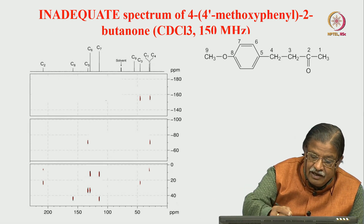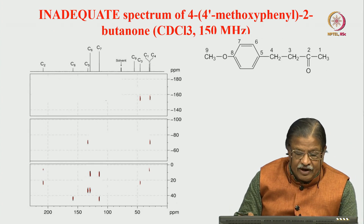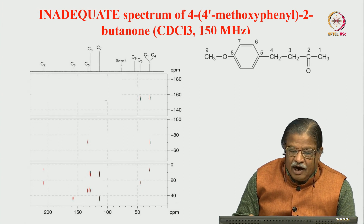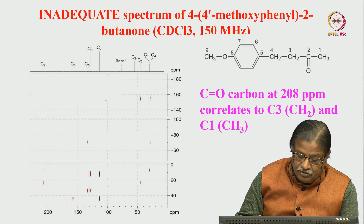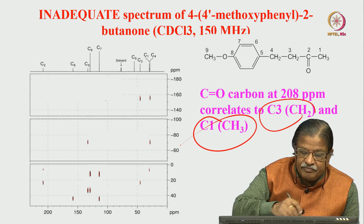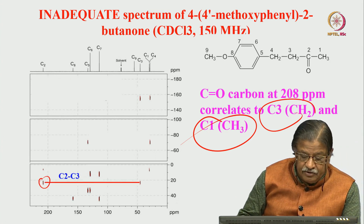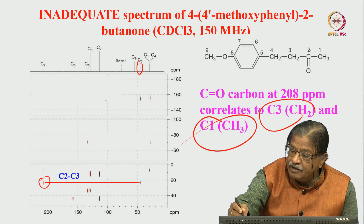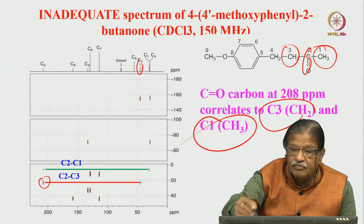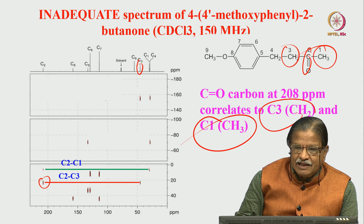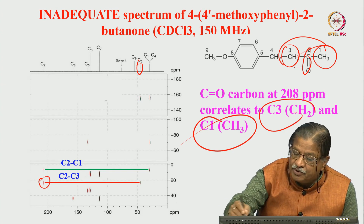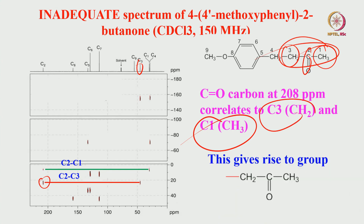This is the INADEQUATE spectrum. If you draw a horizontal line, you can see it is the pseudo-diagonal. Now we start the assignment. First, we need one peak we are confident about. C=O is at 208 ppm and correlates to C3 and C1 - where is 208? It is here. See, it is correlating to C3 carbon and also to C2. This correlation tells me C=O is between these two - I can start thinking C=O is giving a strong correlation to CH2 and CH3, so this must be the group.